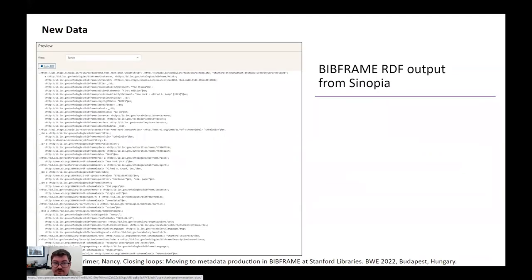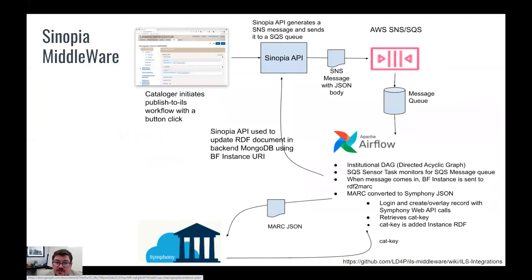Here's an example of BibFrame RDF in Sinopia for an instance, filling the primary need to have a native RDF editor. One of the complexities for moving toward implementation is connecting new and existing systems while MARC is still in play. Here we have a high-level overview of the Sinopia middleware for CIRC Symphony, our current ILS, developed through LD4P3. UAL is now working on setting this up for our own use.